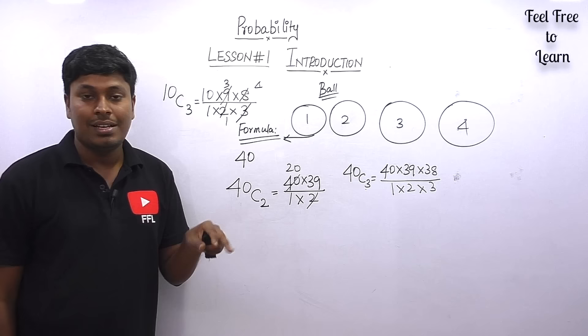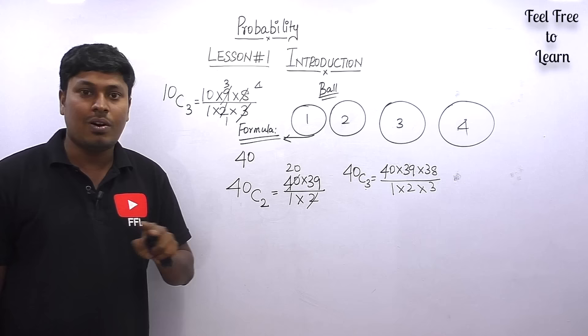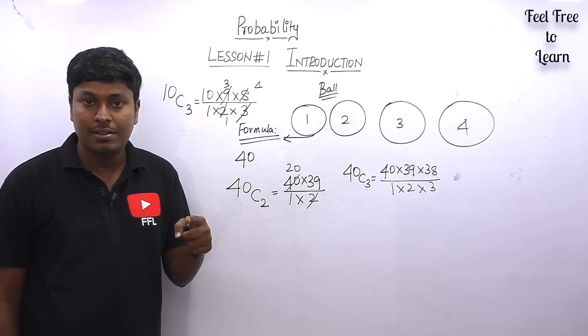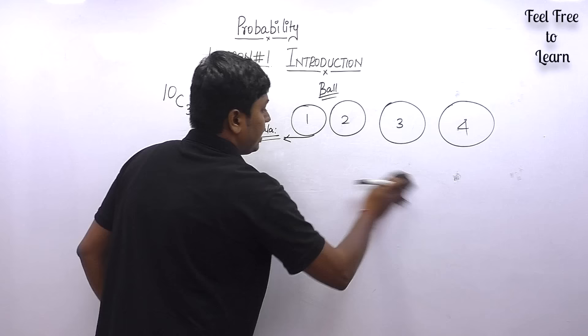For lesson two, three, and four — coins, dice, and cards — the combination formula is not needed. Only the basic probability formula (sum of observations divided by possibilities) is sufficient. The combination formula is applied only from lesson five onward, which is based on balls.